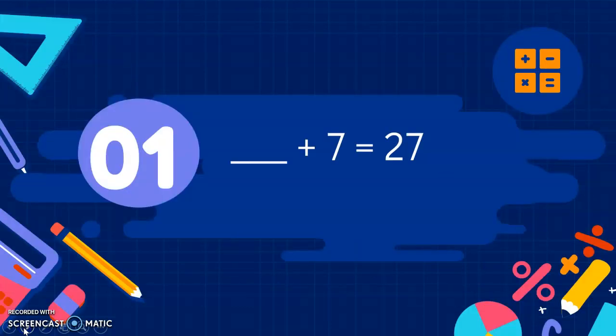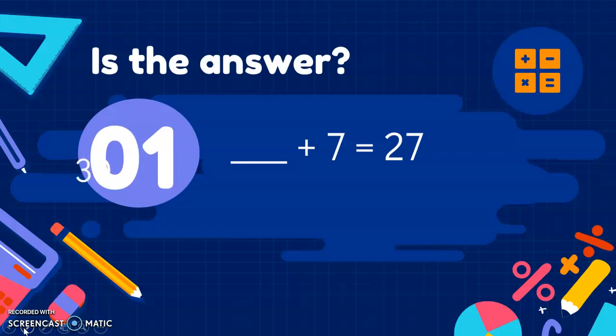Number 1. Something add 7 is 27. Starting off nice and easy. Here's the answer. 30, 20, 10 or 2? It's not 30, not 10. That's right, it's 20 because 20 add 7 is 27.